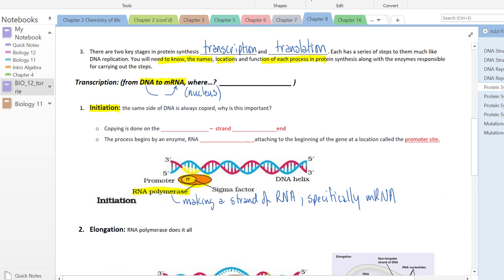It's important to recognize that DNA is always copied on the same strand. Copying is done on what we call the template strand, and that template strand is from the three prime end always. I want you to stop the video and see if you can think of why.